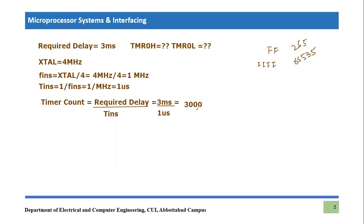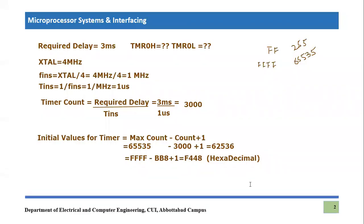This is the valid timer count, and now we have to use a formula for the initial values of the timer. The formula is: initial value = maximum count minus timer count plus one. This formula is derived from the rollover concept we covered in the last lecture, where we learned the basic steps of timer programming.